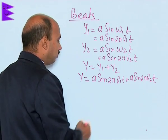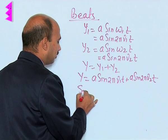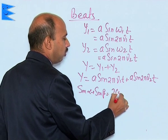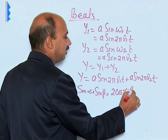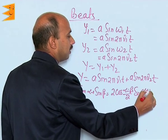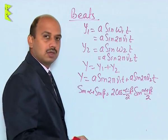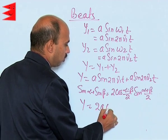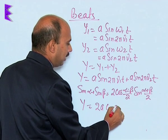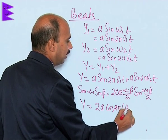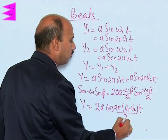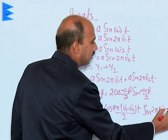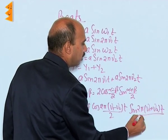Now we apply the identity: sin α + sin β = 2 cos((α − β)/2) sin((α + β)/2). When we solve this, we get y = 2a cos(2π(ν1 − ν2)t / 2) sin(2π(ν1 + ν2)t / 2).